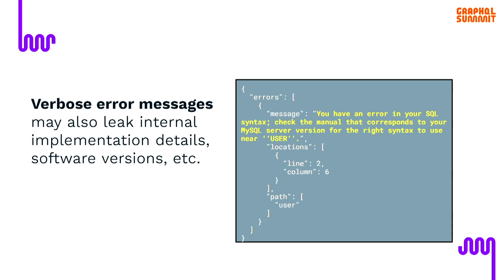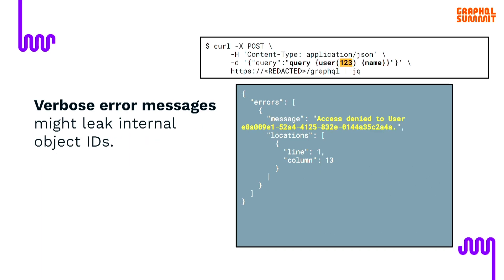Verbose error messages have more risk because they can expose all kinds of internal details — stack traces and that kind of stuff. Really important — and we'll see this later — verbose error messages can also leak internal object IDs. We'll be talking about a specific vulnerability which relies on an attacker being able to leak this, so this is actually a big deal.